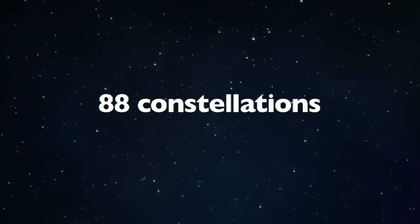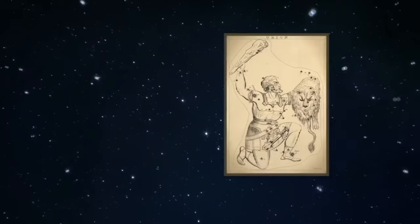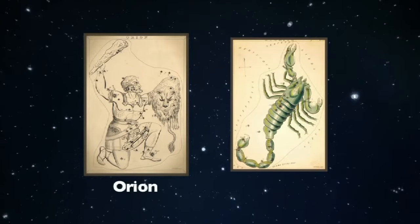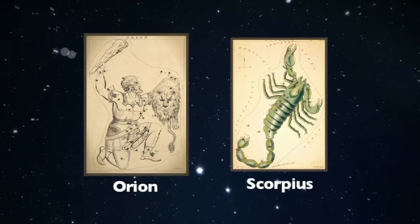Let's learn about a few of the most common and easy to identify constellations so you can be a stargazer tonight. Two of the most prominent constellations are Orion, the Hunter, and Scorpius, the Scorpion.